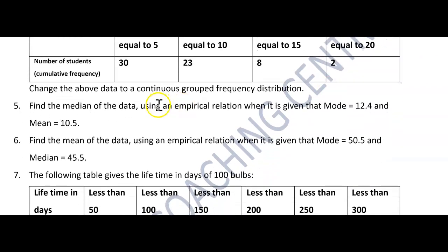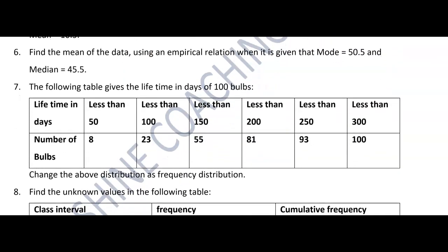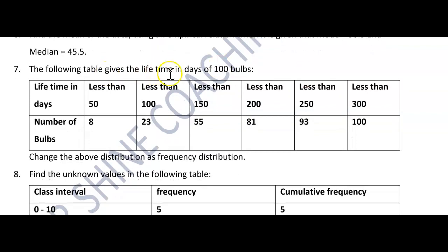Question 5: Find the median of the data using the empirical relationship, given that mode equals 12.4 and mean is 10.5. Question 6: Find the mean of the data using the empirical relationship, given that mode is 50.5 and median is 45.5. Question 7: The following table gives the lifetime in days of 100 bulbs — they have given lifetime in days and number of bulbs, and they are asking you to change the above distribution into a frequency distribution.